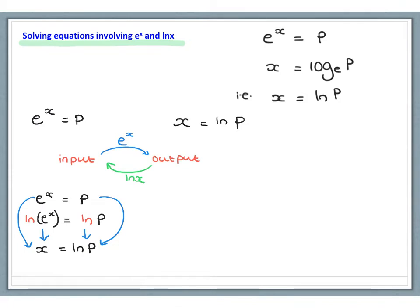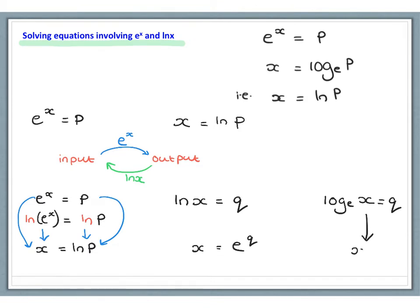Going the other way: if ln of x equals q, then x equals e to the power of q. Think of it as log to the base e of x equals q, so x equals the base e to the power q. The hidden step is that both sides are raised to the power of e: e to the ln x equals e to the q, and e to the ln x simplifies to x because they are inverse functions. We normally skip this middle step but it is nonetheless valid.